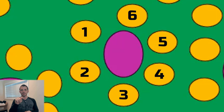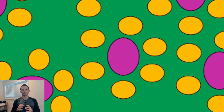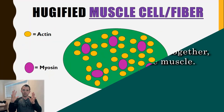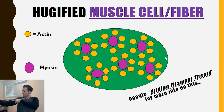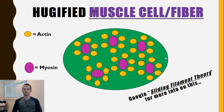For every individual myosin, there are six actin that surround it. Effectively, what happens when muscles contract is the myosin reach up, grab the actin, and pull them together. That shortens the length of the muscle. Those myofilaments stack on top of each other and the muscle gets larger. You can Google 'sliding filament theory' if you've never heard of this and learn more. But for the purposes of this video, that's what it looks like — we're still talking about one individual muscle cell.